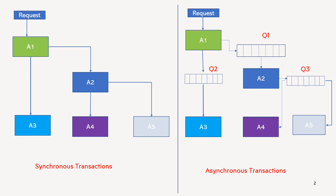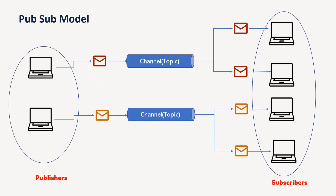But whenever we are dealing with a situation where a customer or client needs a response right away, at that time we have to use synchronous communication. So this is a major difference between these two ways of communication. And based on this asynchronous communication, we have the publish-subscribe model as well.